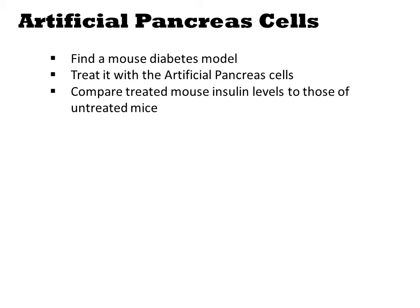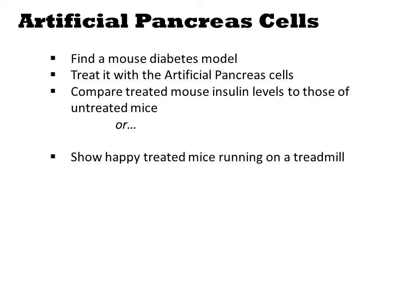Here's another example. Suppose you want to make genetically engineered cells to replace those that have been killed in patients with diabetes. The technical experiment would involve identifying a mouse diabetes model, performing the treatment with the engineered cells, and then quantifying insulin levels in treated and untreated mice. In addition, taking a video of the mice running around on a treadmill after treatment demonstrates to the audience that not only are insulin levels normal, but the mice are more overtly normal — they don't look fatigued, they don't have weight problems, wounds, or other abnormalities.